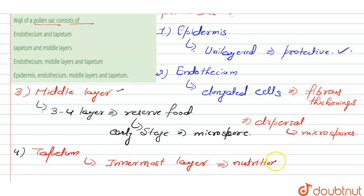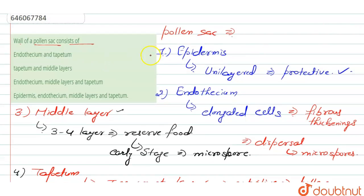So therefore, we can say that this pollen grain consists of four layers: the epidermis, endothecium, middle layer, and tapetum. So the right answer for this question is option number four.